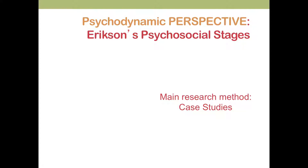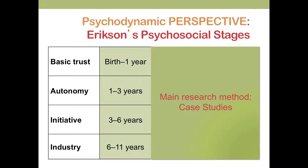Erikson espoused a psychodynamic perspective in his psychosocial stages theory. The basic question in this perspective is: what are the needs and challenges of people at different stages of their lives? Are the needs of an infant the same as those of an adolescent or an adult? Erikson tried to look at internal psychological challenges as well as external social ones — psychosocial challenges at each stage of our lives — and how we overcome them successfully to move on to the next stage.